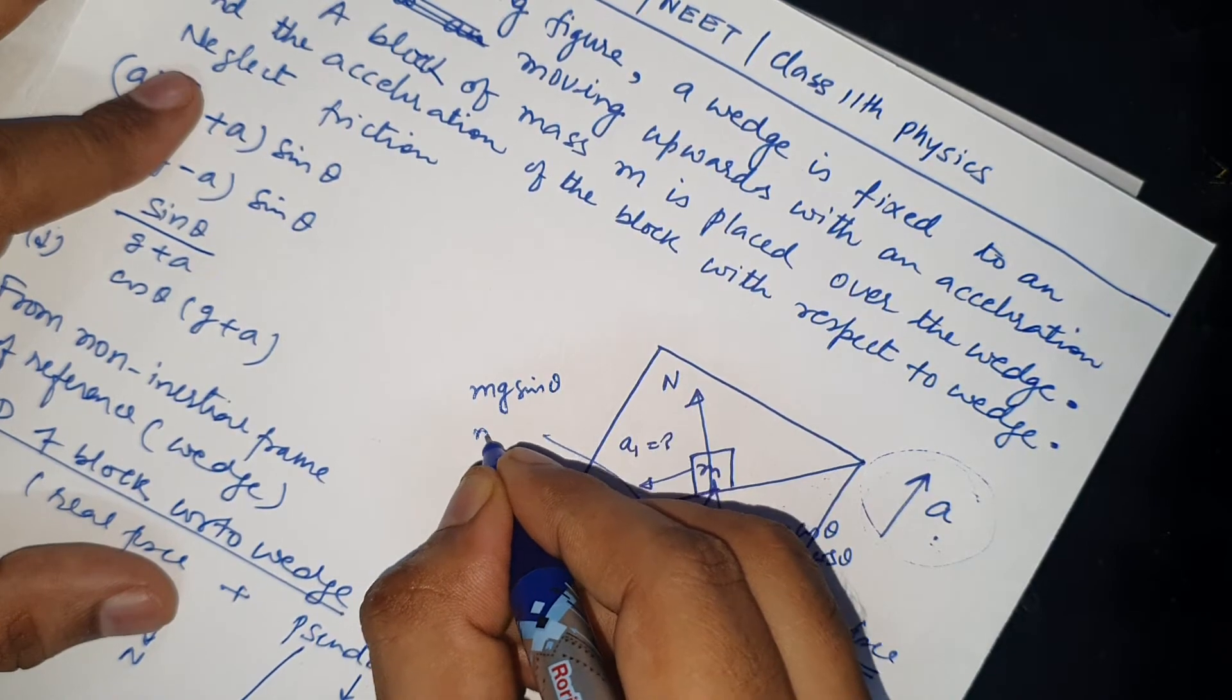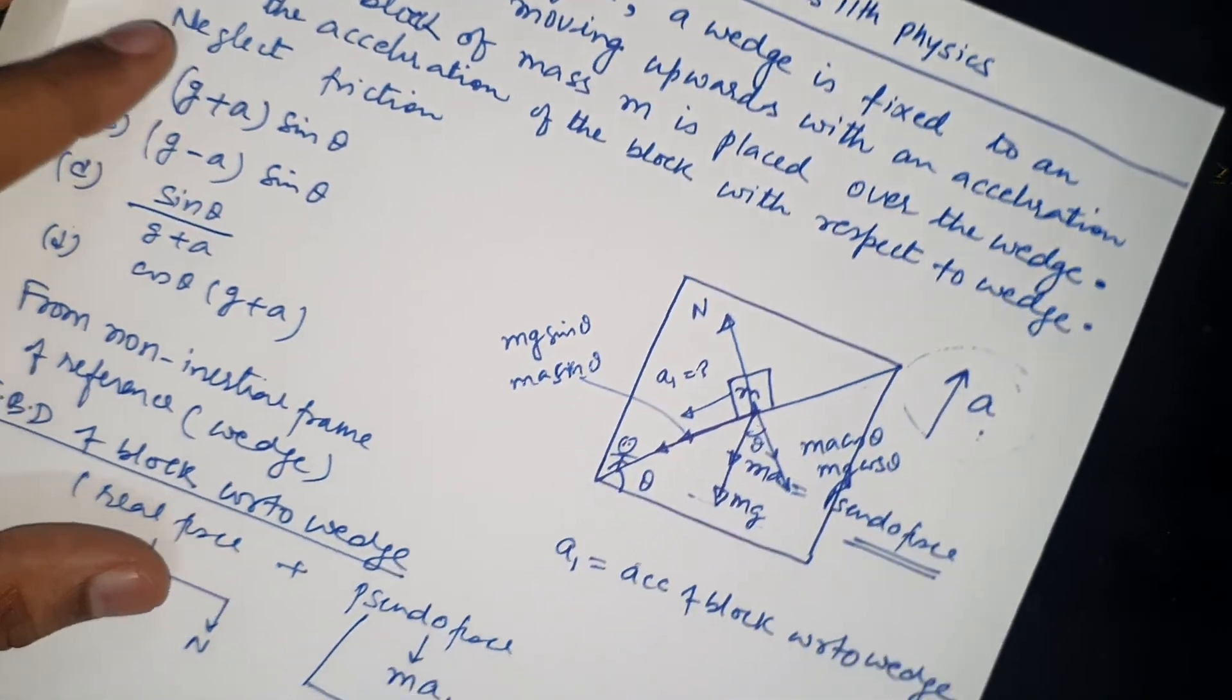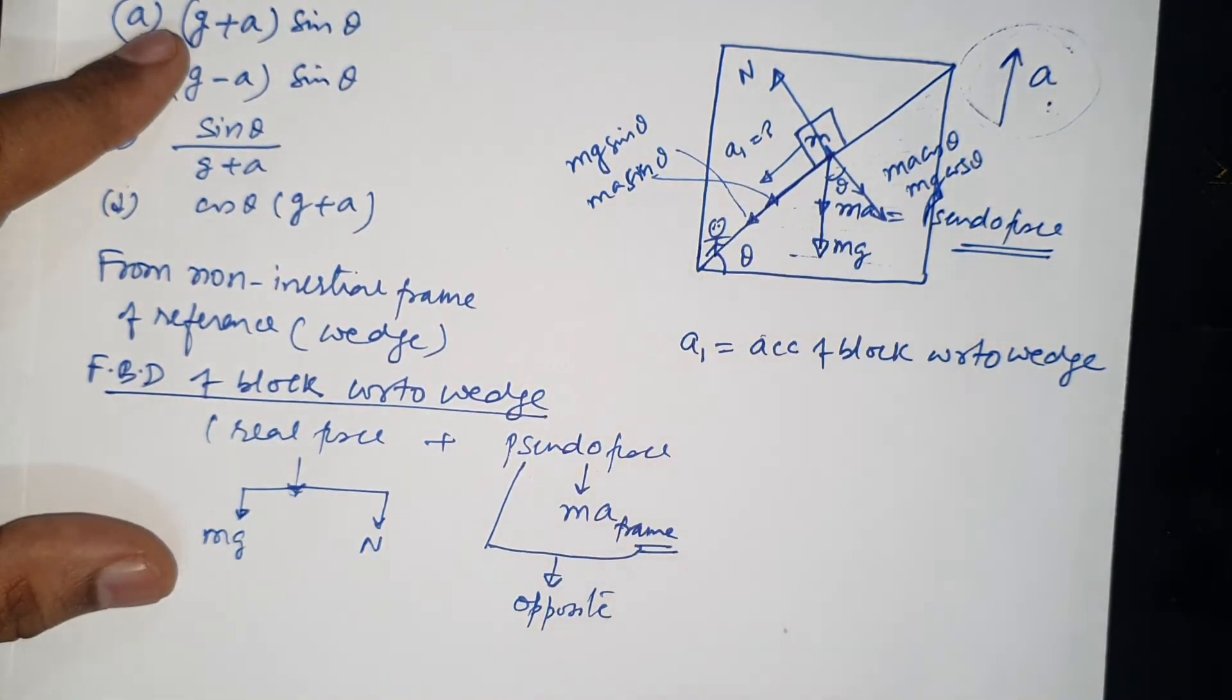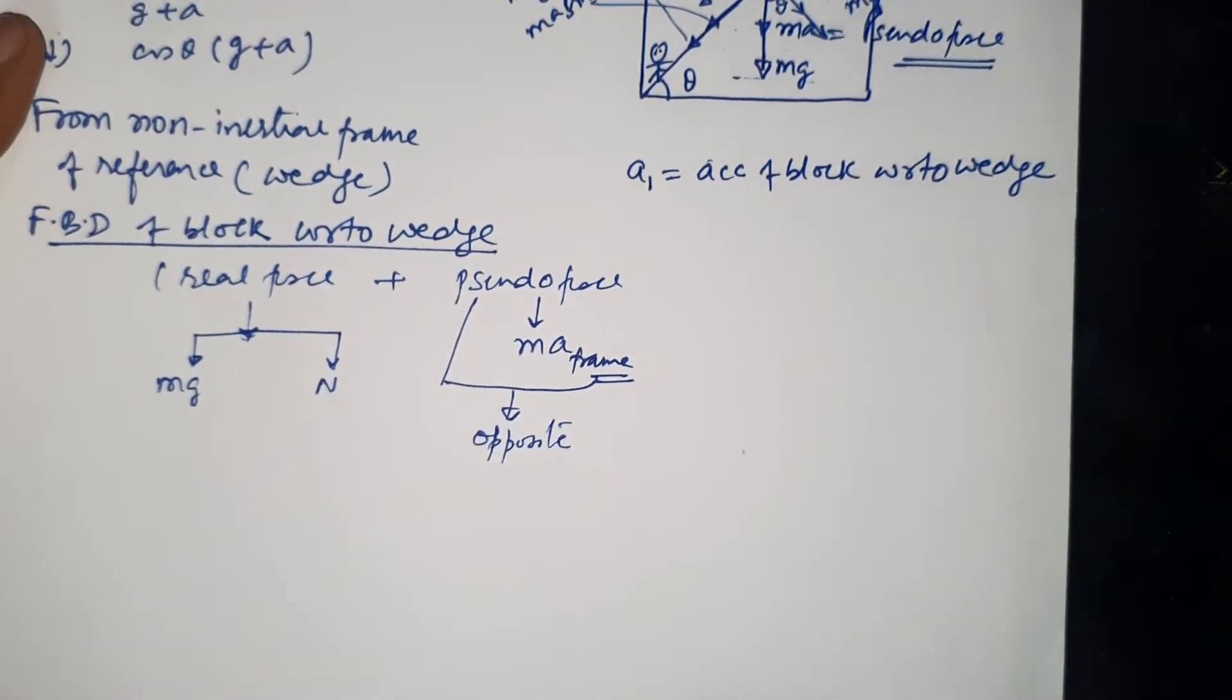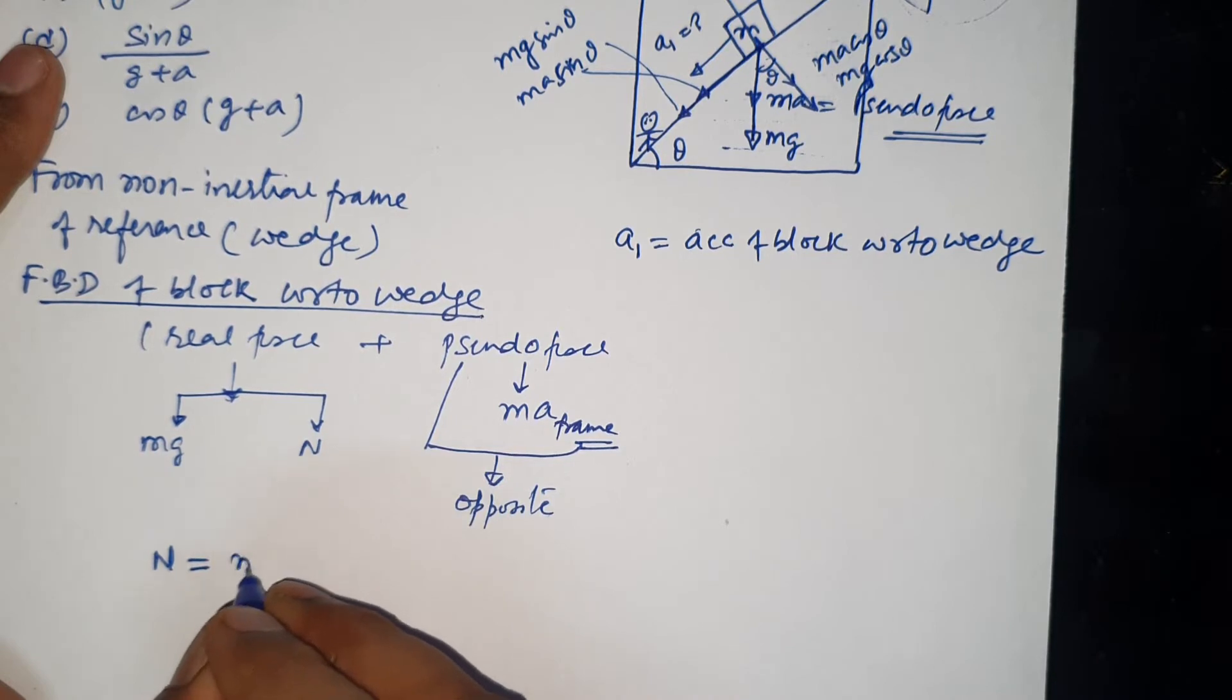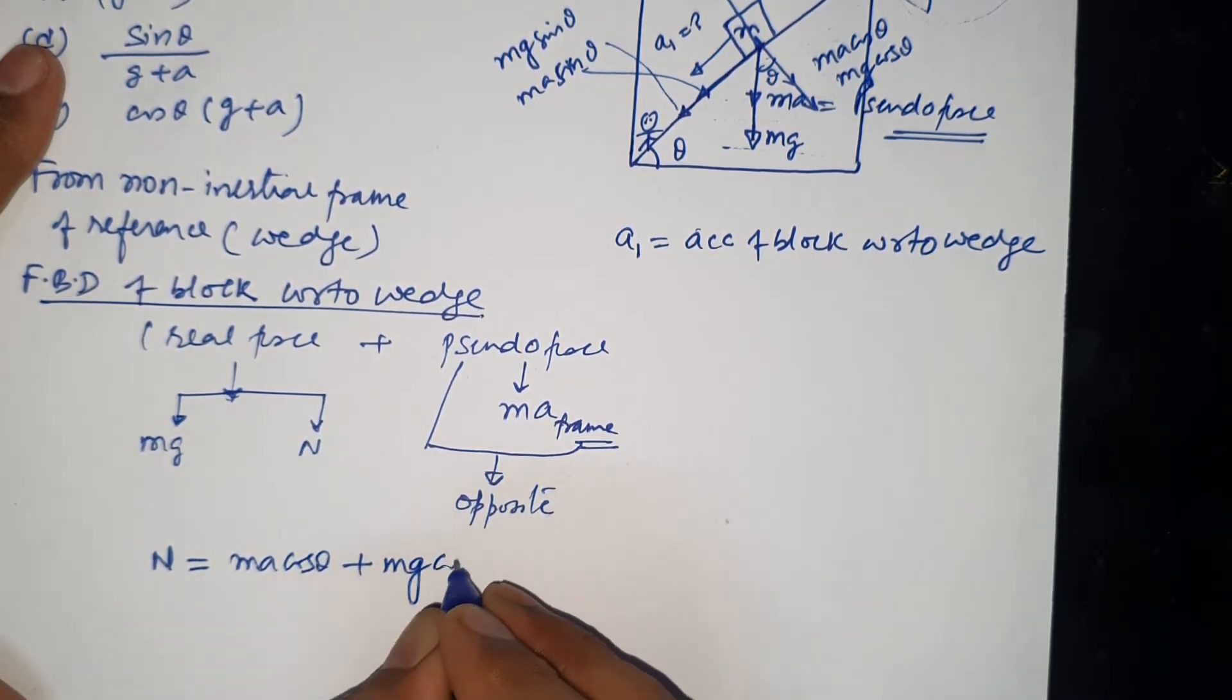mg sin theta and ma sin theta, this component, and net force N balance: ma cos theta plus mg cos theta.